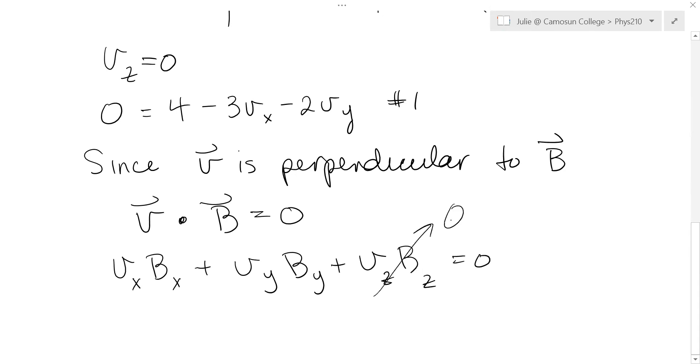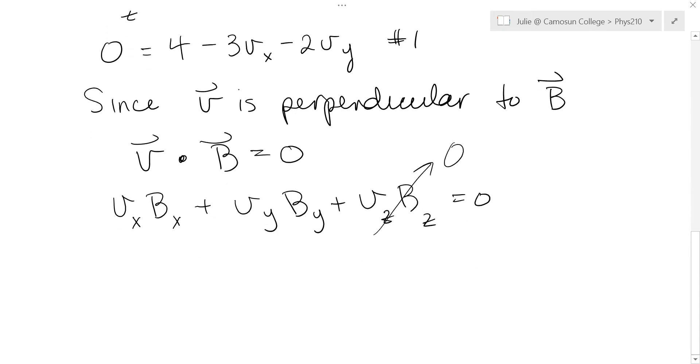Well, those are both zero anyway, so that's out. And that leaves us with Vx and Bx is two plus Vy and By is negative three equals zero. There's equation number two. So we have two equations with two unknowns, Vx and Vy. It's Vx that we want.